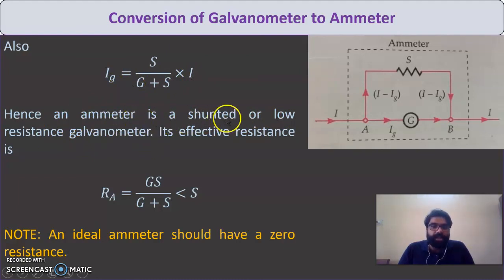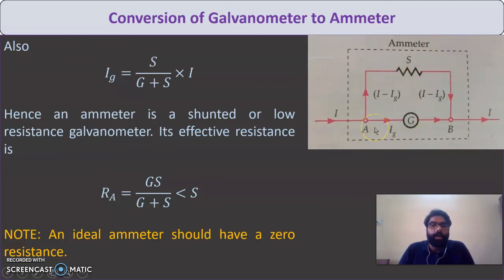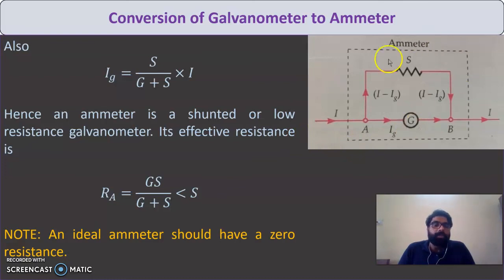An ammeter is a shunted galvanometer, also called a low-resistance galvanometer. Its effective resistance is G×S/(G+S), which is less than S (the shunt). The ideal ammeter should have zero resistance so all current passes through it. Connecting resistance in parallel gives minimum resistance — if connected in series, resistance would increase and it would not work as an ammeter.